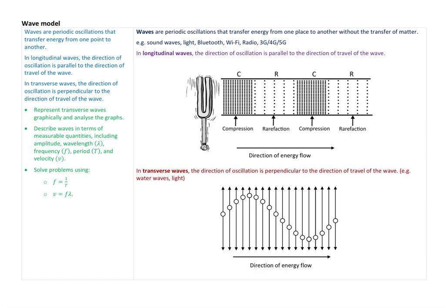When we talk about a wave in physics, what is it? Waves are periodic oscillations that transfer energy from one place to another without the transfer of matter. When we talk to somebody, little particles don't come out of our mouths to carry sound. When we see light, or use Bluetooth, Wi-Fi, radio, TV, or mobile phones, we're getting the transfer of energy from one place to another without the transfer of matter — that's the key thing that really makes a wave.